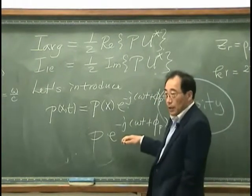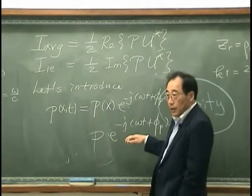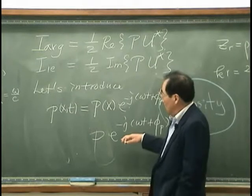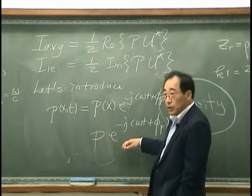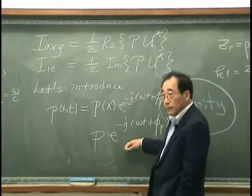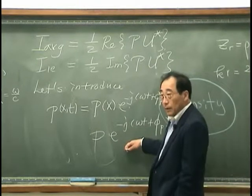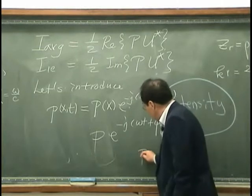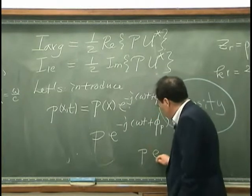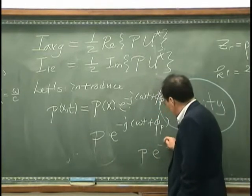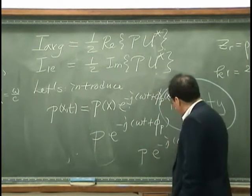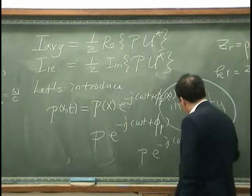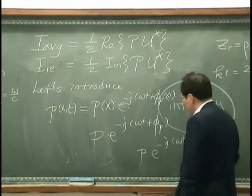This is the one-dimensional ray. We often write this as ωt minus ks.